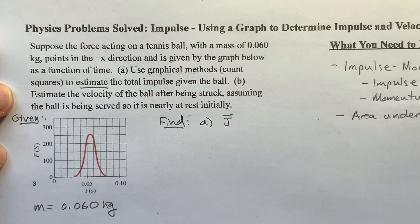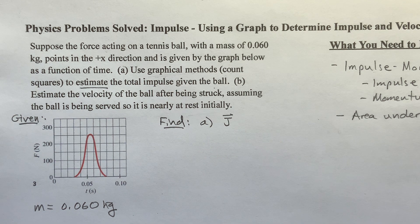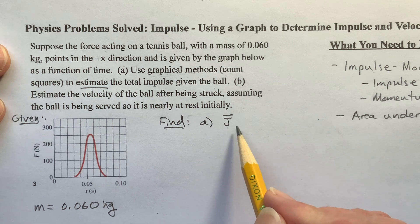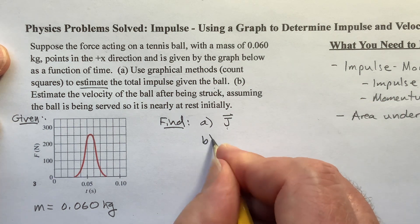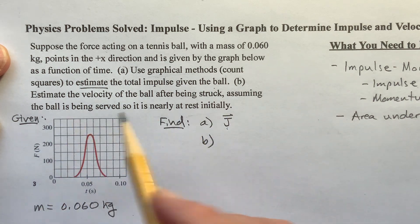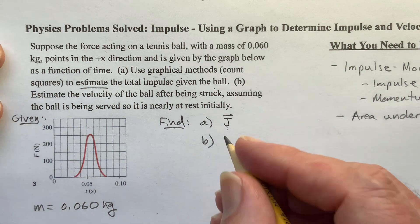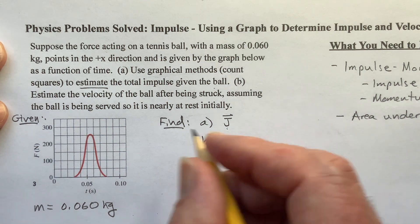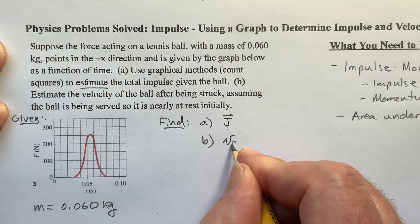Well, using graphical methods, we want to estimate the total impulse given the ball. So for part a, I'm going to use capital J with a vector hat on it to represent impulse. Now, not all books do that. Some books don't even have a variable for impulse. They just call it force times time. But this is going to represent impulse. And then for part b, if you know the impulse, you can figure out using the impulse momentum theorem what the change in momentum is. And if you know the mass and the initial velocity, you can figure out the final velocity.